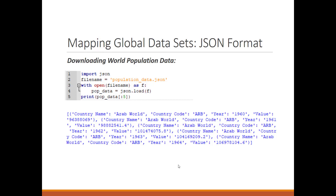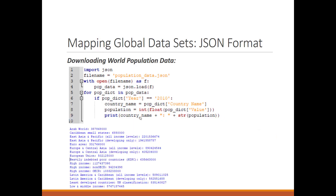This shows the name of the country and its population for different years. Here we want to do some analysis of the population of these countries and use the pygal library to plot graphs on maps. We get the population for only 2010, so we have a dictionary and loop through the pop_data, filtering for only the year 2010.